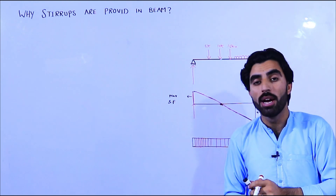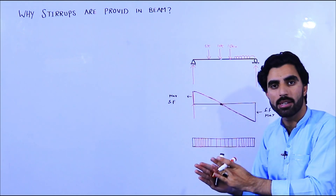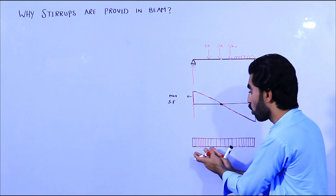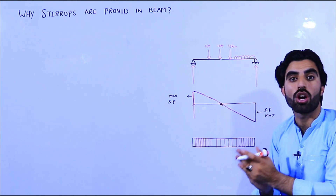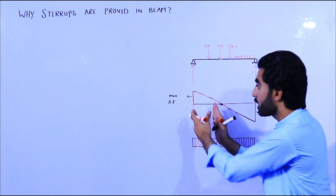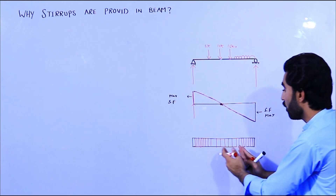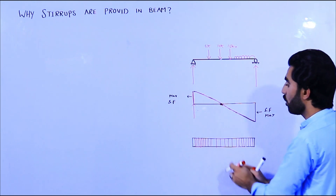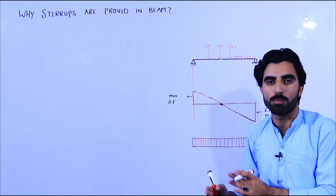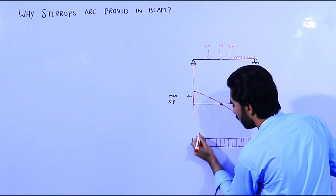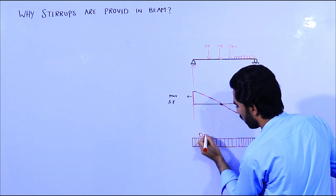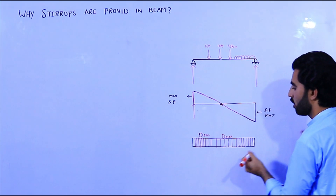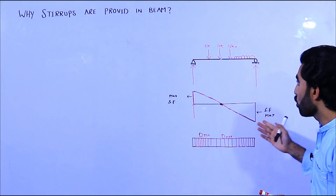Shear force wants to cut the beam section where shear force is maximum. So here, near the support where shear force is maximum, we provide more amount of stirrups. At the midpoint, shear force is minimum, so stirrups should be placed with more space. The distance d should be minimum near the support and d should be maximum at the mid. This is the reason that we provide stirrups in a beam.